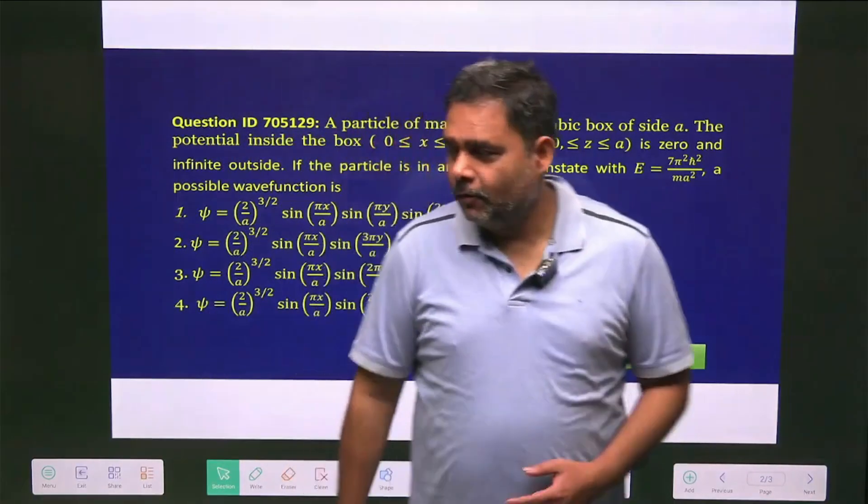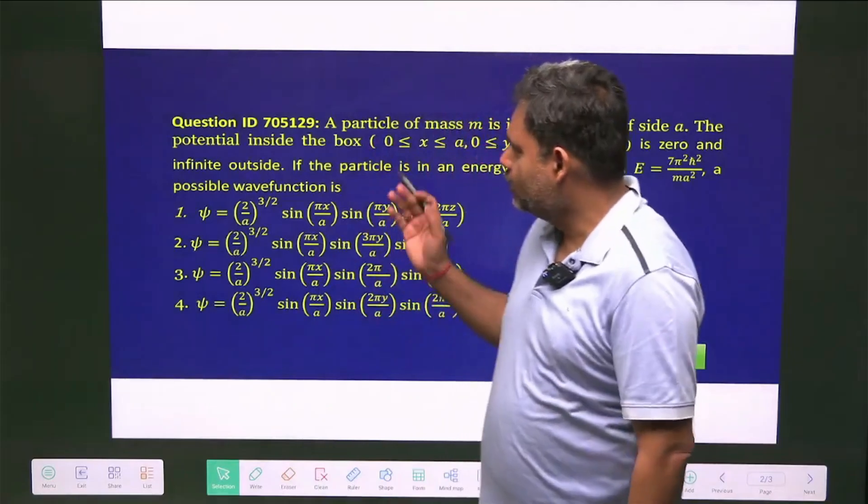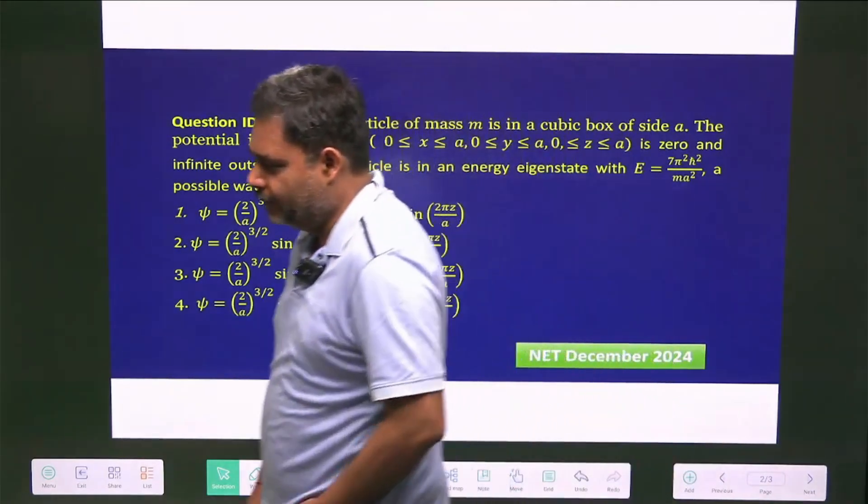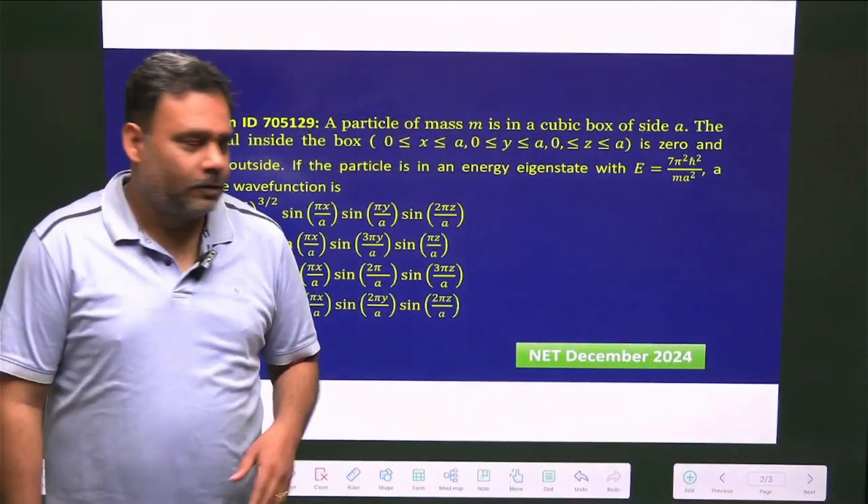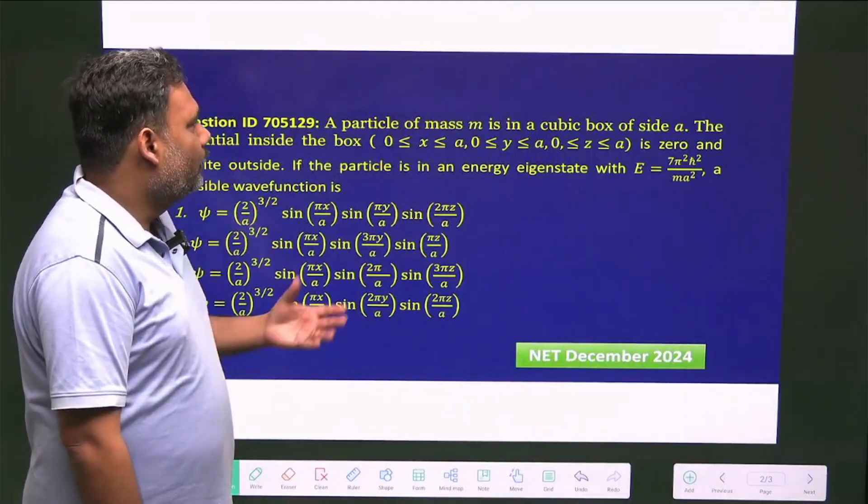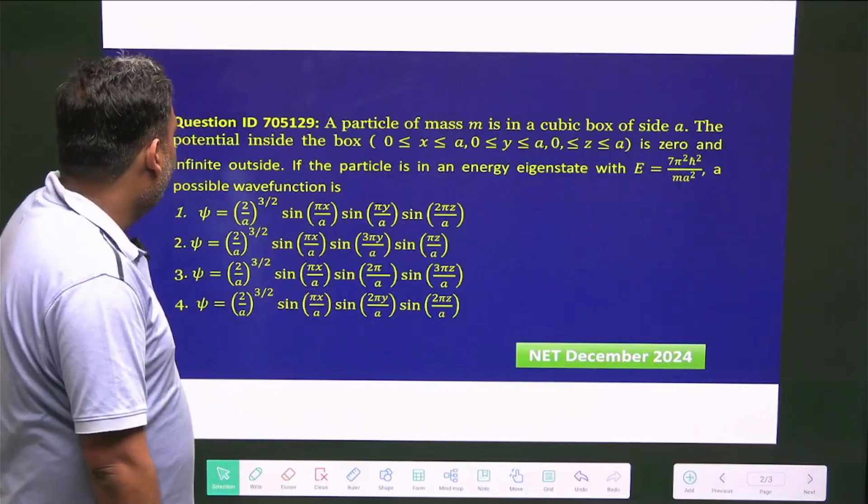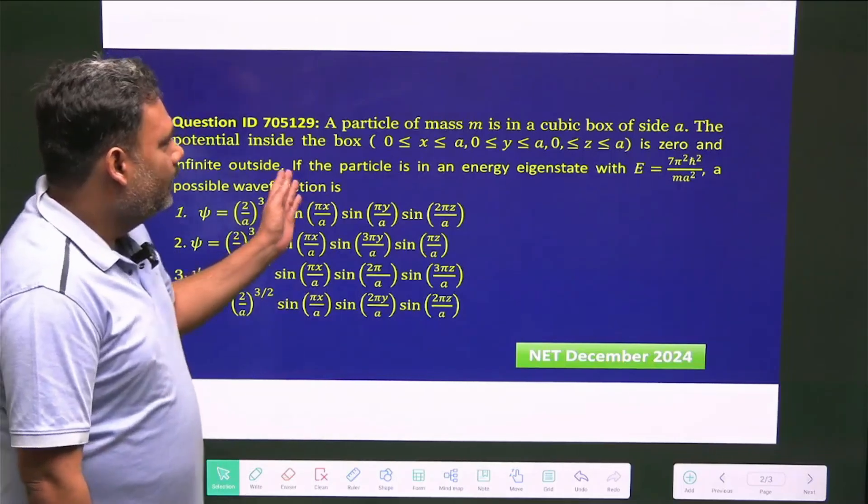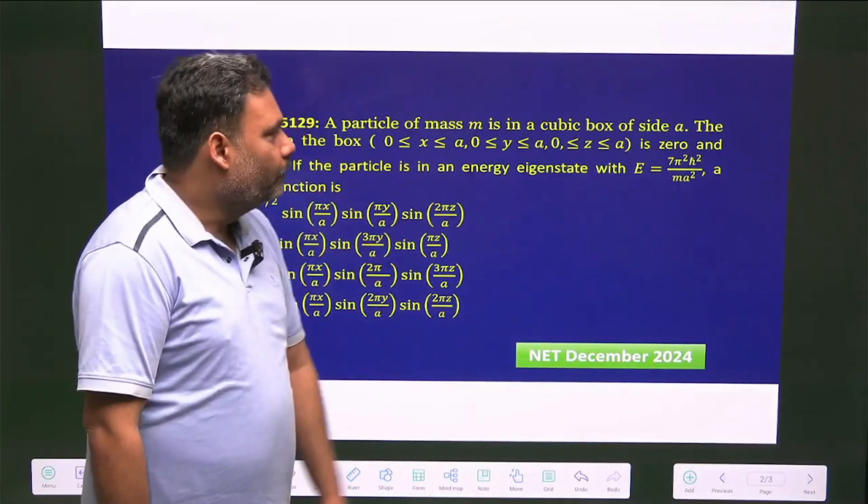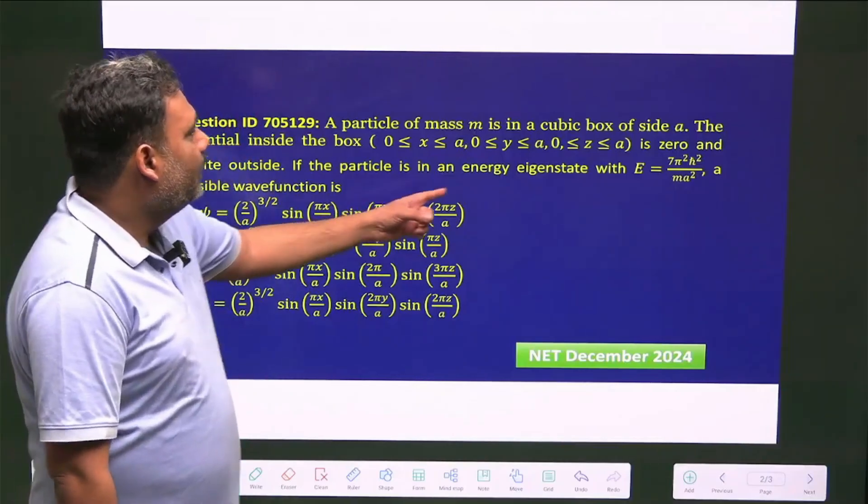Hello everyone, let's try the next question from CSIR NET December examination. This is one of the simplest questions. In this question, a particle of mass m is confined into a cubic box of side a, and the potential inside is zero, so this is a free particle.